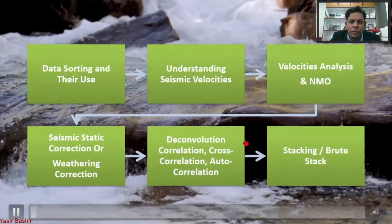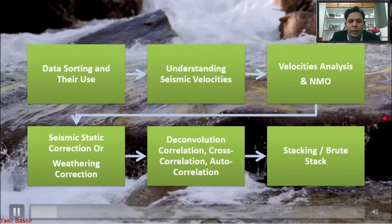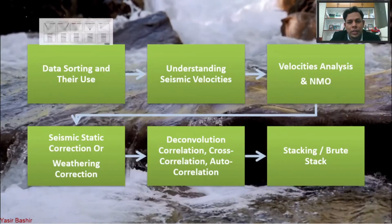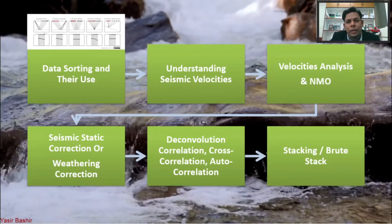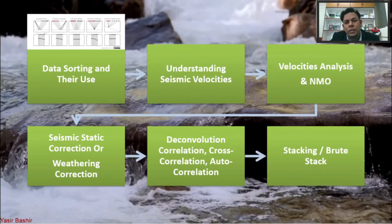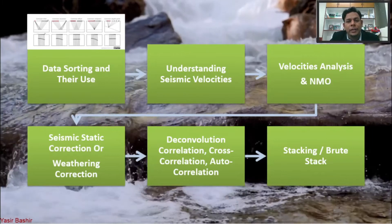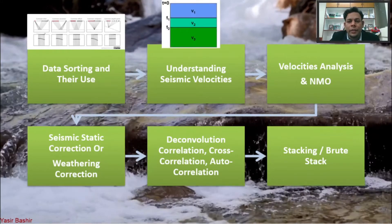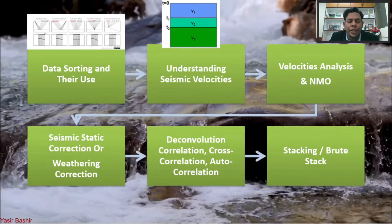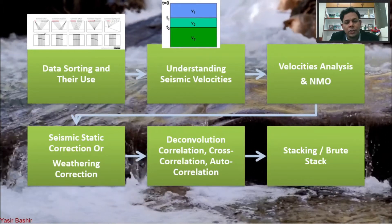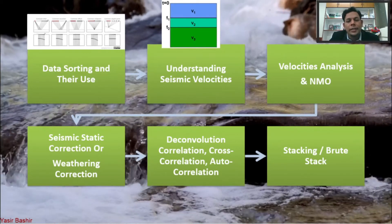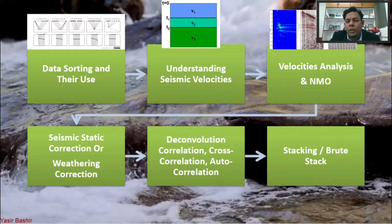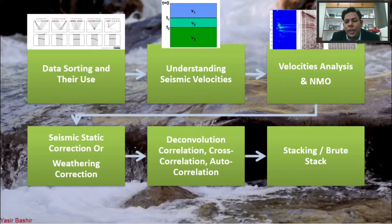The ultimate goal of this chapter is to understand data sorting and its uses — how many types of data sorting we have and why we use each dataset for specific processing. We will also understand seismic velocity types such as interval velocity, average velocity, NMO velocity, stacking velocity, and migration velocity.